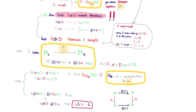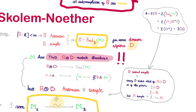Now to make this argument, we used the fact that R⊗D is a simple finite dimensional k-algebra, so why is that? It is finite dimensional because both R and D are finite dimensional over k. Indeed, S is isomorphic to a matrix algebra over D, and since S is finite dimensional over k, D must also be finite dimensional over k.